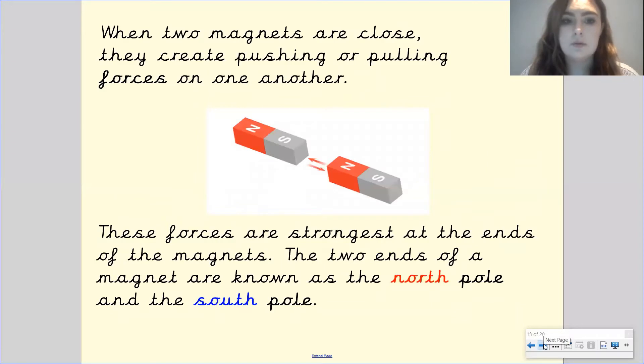When two magnets are close they create a pushing or pulling forces on one another which you can see here. These forces are strongest at the ends of the magnets and the two ends of the magnets are known as north pole and south pole. So as we said the ends of the magnets.